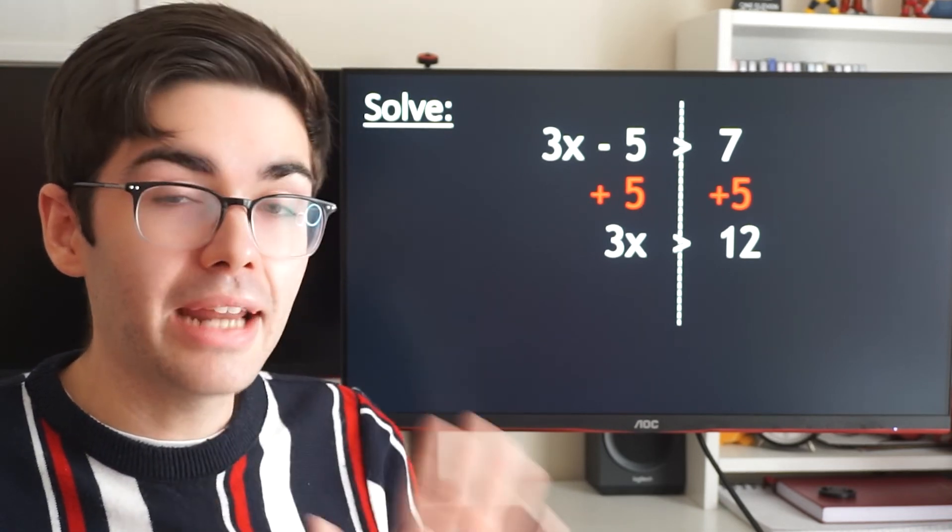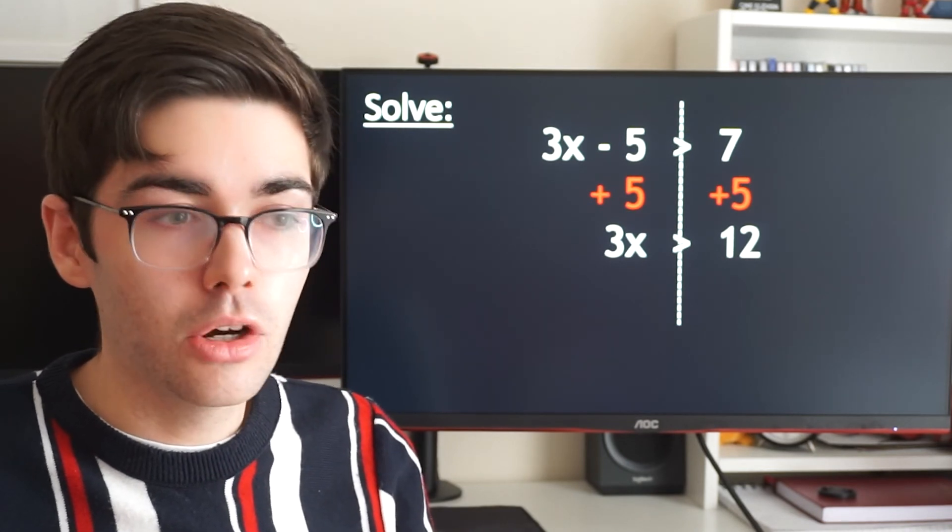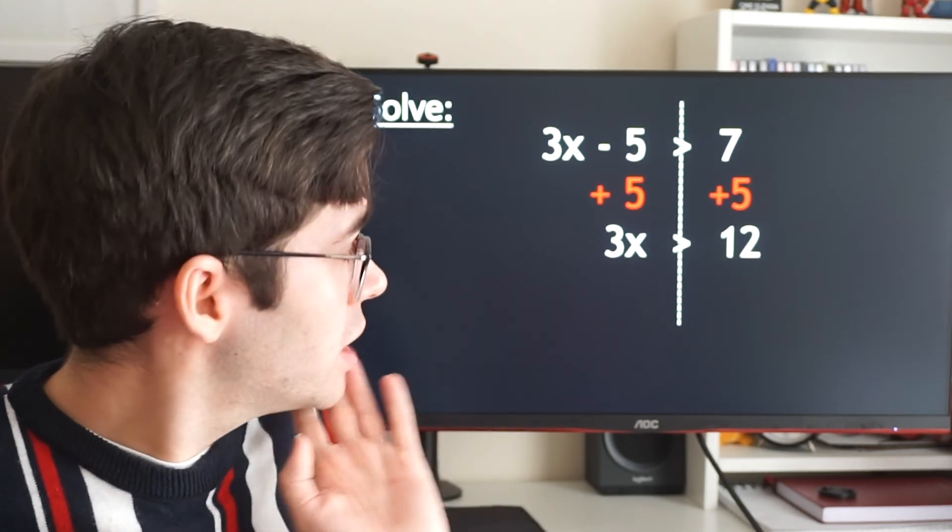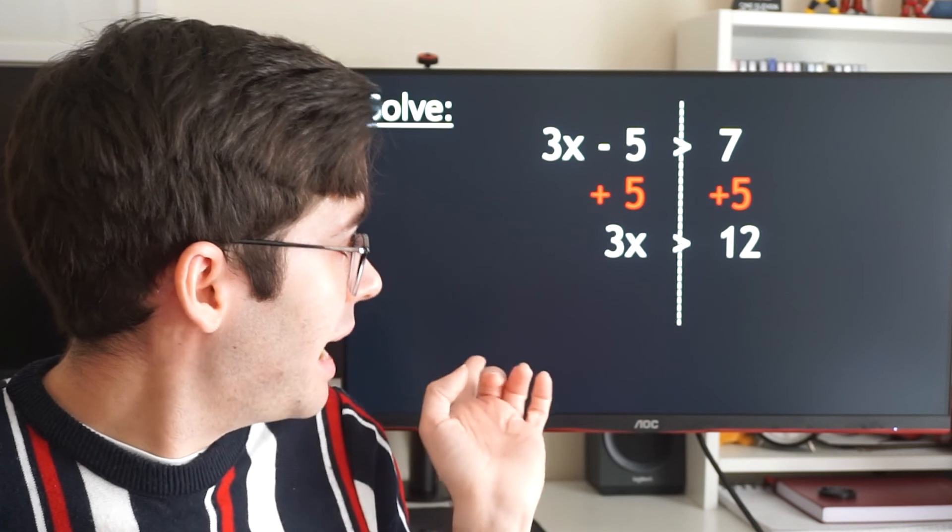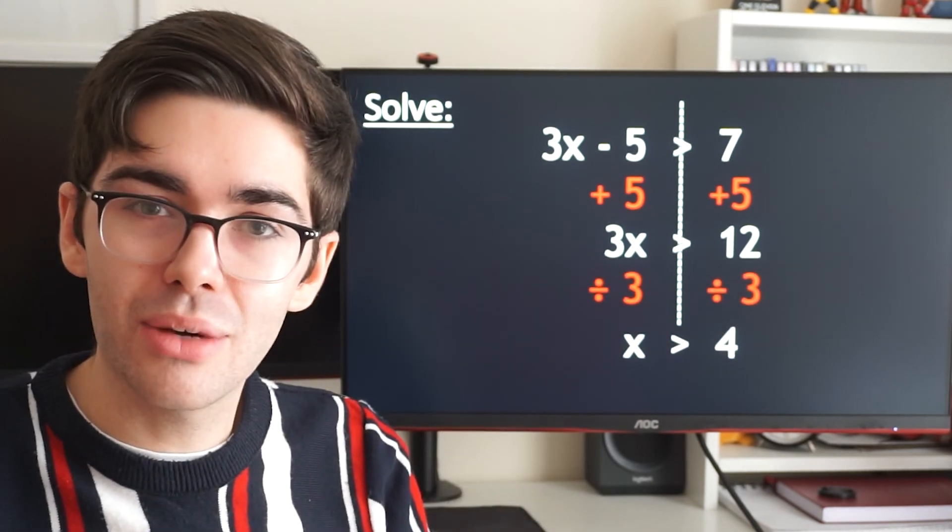What do I have to do next? I want x. I don't want 3x. I have to divide by three because that's the opposite of timesing by three. Divide both sides by three. I'm left with x is greater than four and that would be the answer to that question.